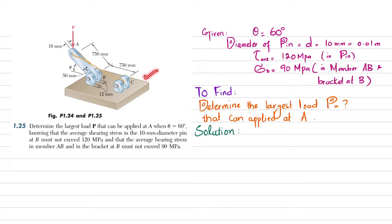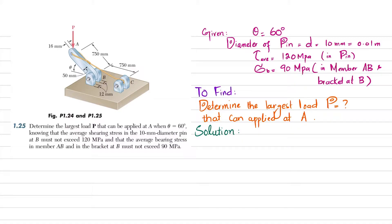You can see in the figure: this is member AB where load P is applied, these two are the brackets, and this is the pin. The diameter of the pin is given as 10 mm. The average shearing stress in this pin is 120 MPa, and the average bearing stress in member AB as well as in the brackets is 90 MPa. We have to determine the maximum load P that can be applied at point A.